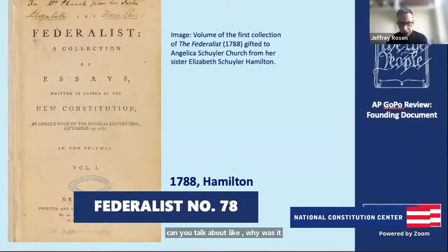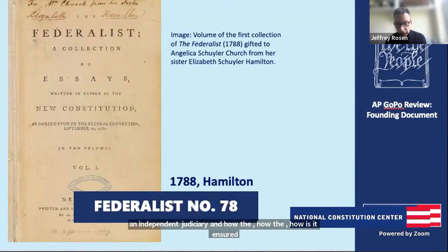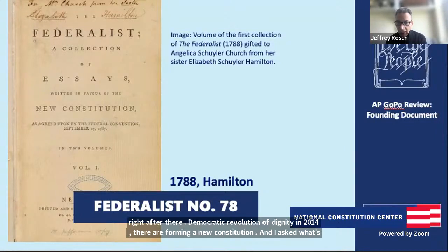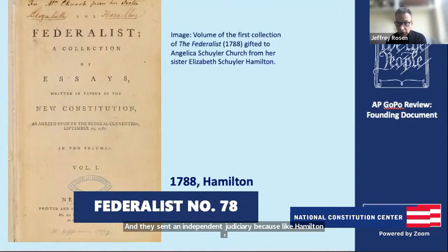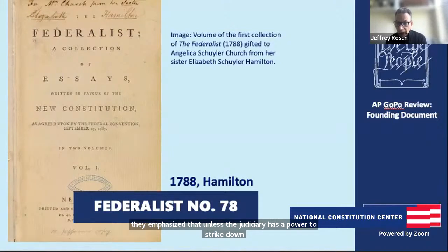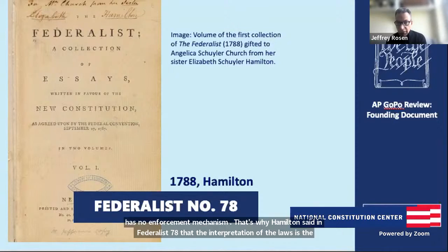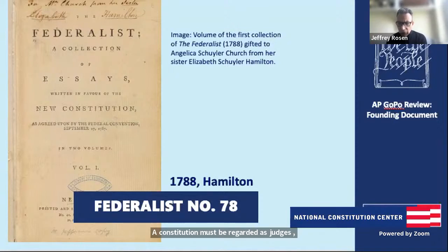I was in Ukraine a few years ago right after their democratic revolution of dignity in 2014. They were forming a new constitution, and I asked what's the most important element — they said an independent judiciary. Like Hamilton, they emphasized that unless the judiciary has the power to strike down all acts contrary to the tenor of the constitution, the constitution has no enforcement mechanism. That's why Hamilton said in Federalist 78 that 'the interpretation of the laws is the proper and peculiar province of the court. A constitution must be regarded by judges as fundamental law, and it belongs to them to ascertain its meaning.'